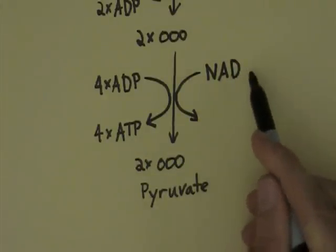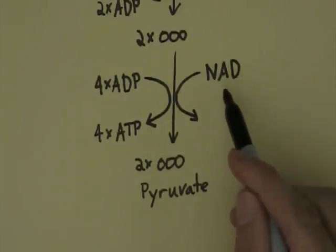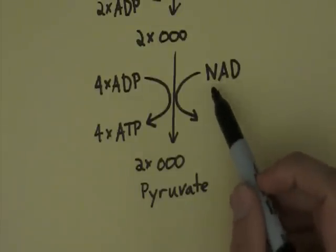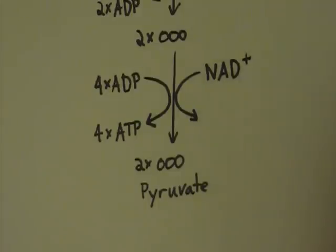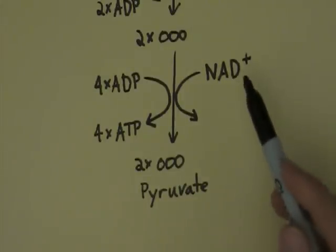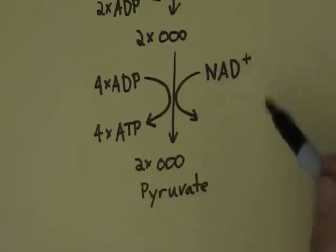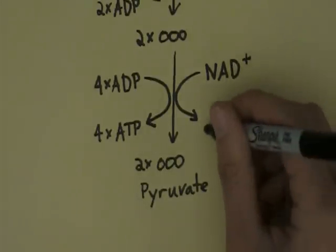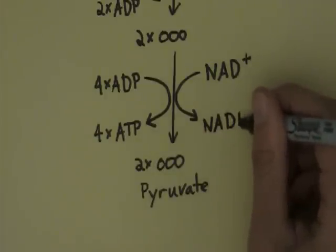At the same time as this, we also have high-energy electrons being picked up by a high-energy electron carrier. Now we've come across one before called NADP. Well, this is not photosynthesis, this is respiration. And in respiration, the main electron carrier is NAD+. It's very common that students get these two mixed up, so be careful. If a P is present, it's photosynthesis. The NAD+ is transformed into the high-energy electron carrier NADH.